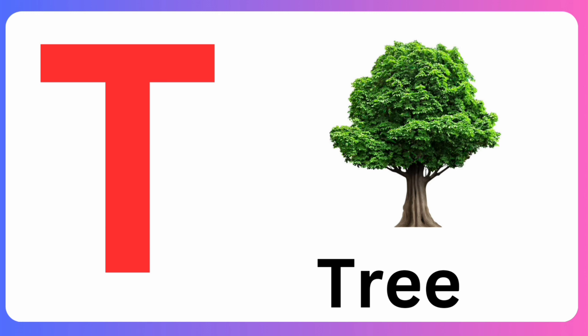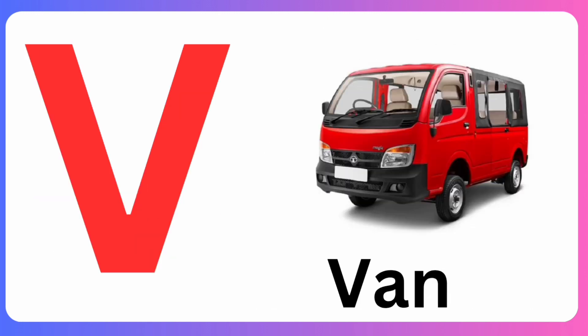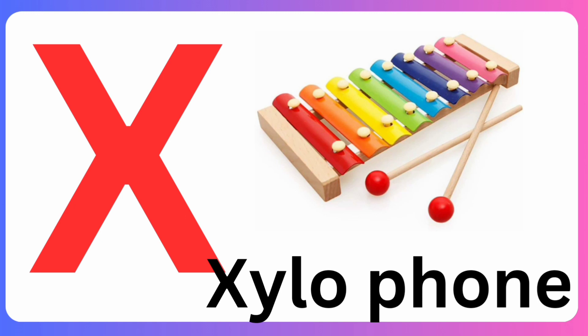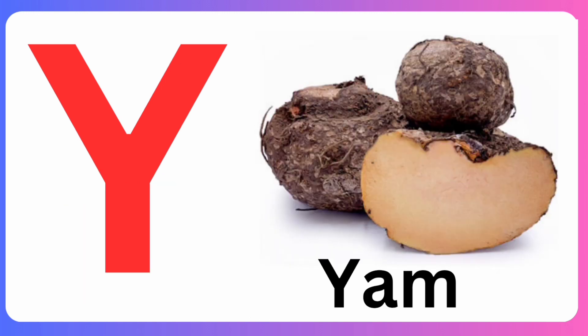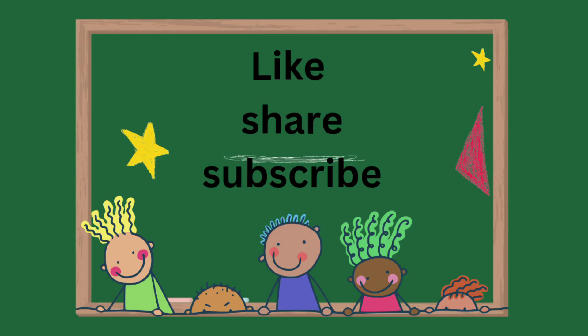Tree, U for Umbrella, V for Van, W for Wolf, X for Xylophone, Y for Yam, Z for Zebra. Thank you all.